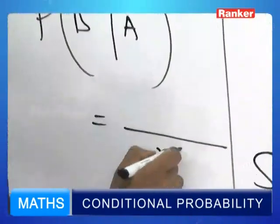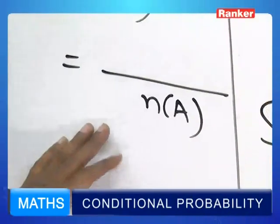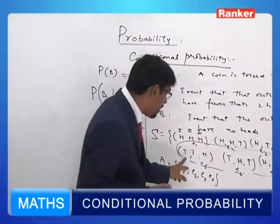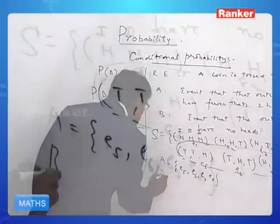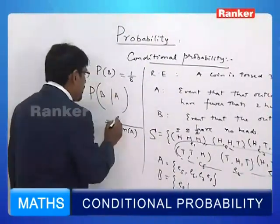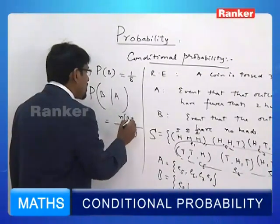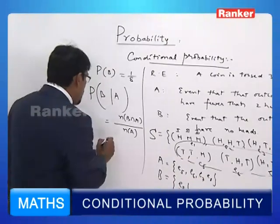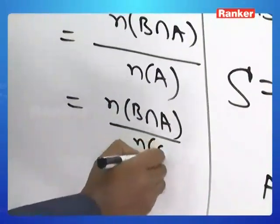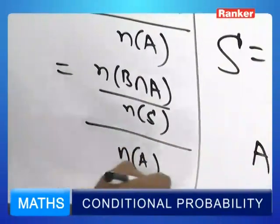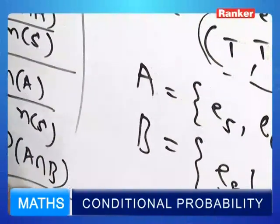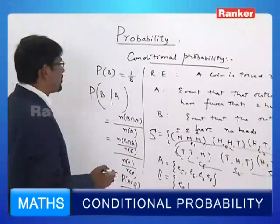So, N(A) is written in the denominator. Within A, how many cases are favorable to B? B happens to be just E8. So within A, the cases favorable to B give us N(B ∩ A) divided by N(A). We can also write this as N(B ∩ A)/N(S) divided by N(A)/N(S). So what we have here is: P(B | A) = P(A ∩ B) / P(A). This is the conditional probability formula.